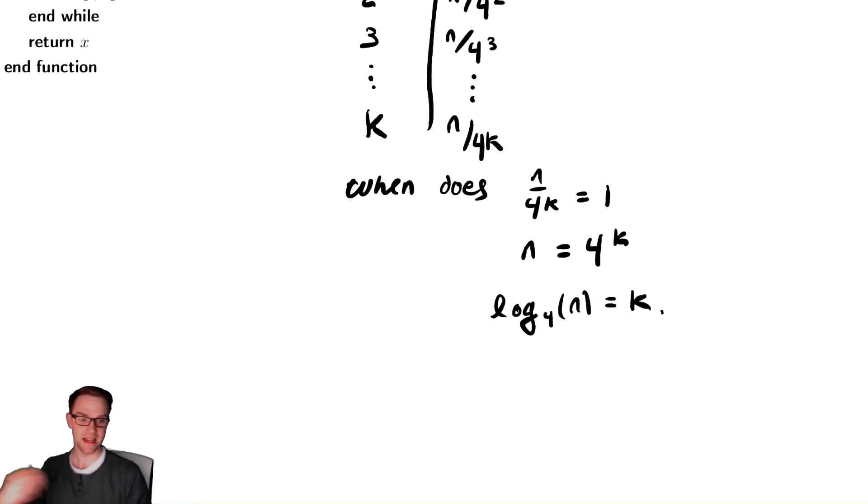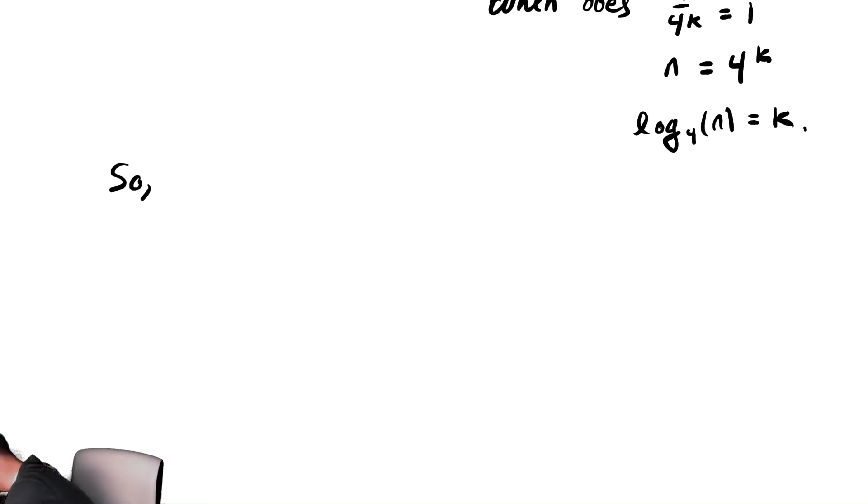And now that k is, again, approximately my number of iterations of the while loop. Therefore, I can express T of n in my convenient way, which is that each run takes constant time, and it runs approximately log base 4 of n times. Therefore, T of n is in theta of log of n.